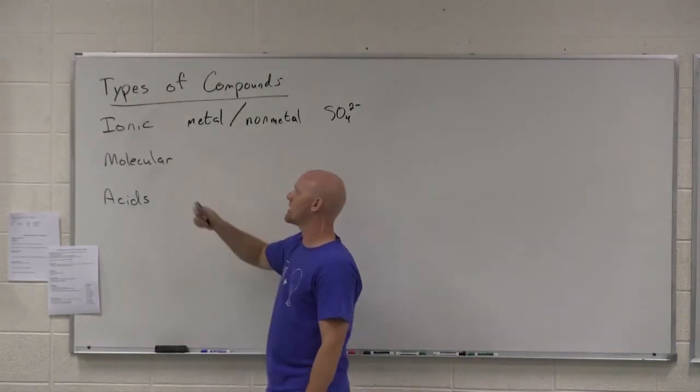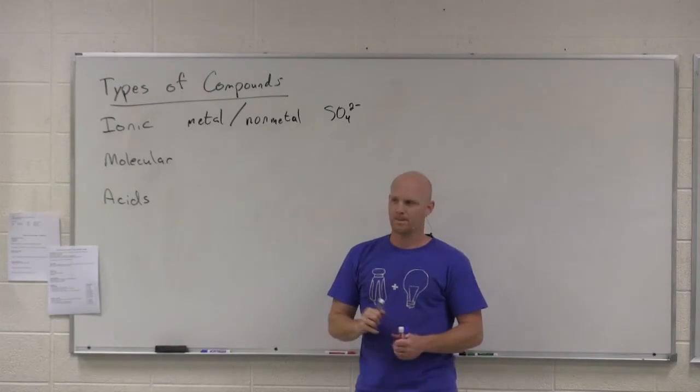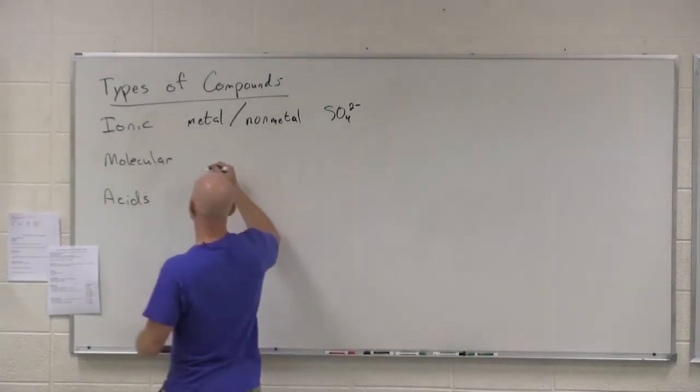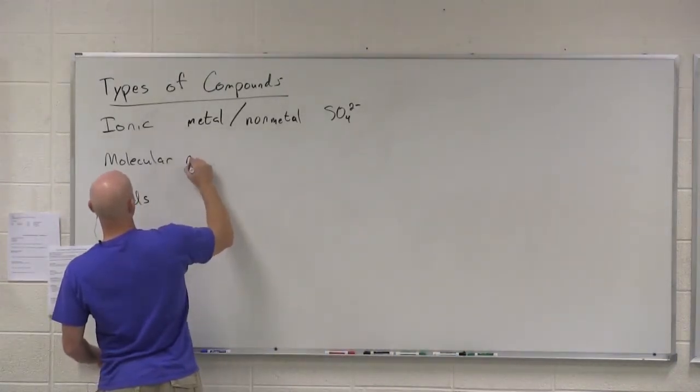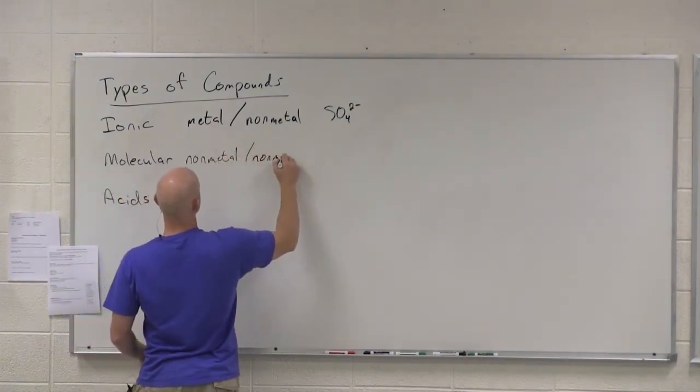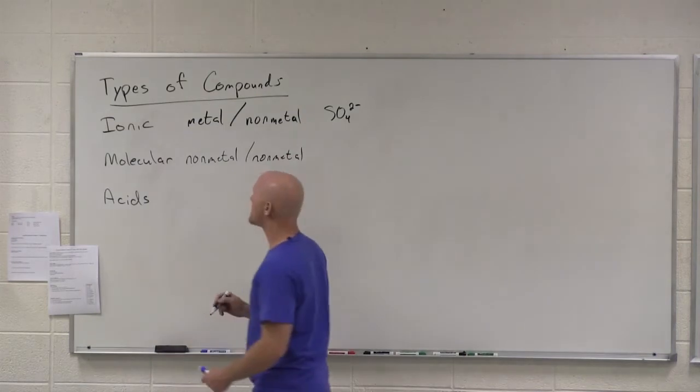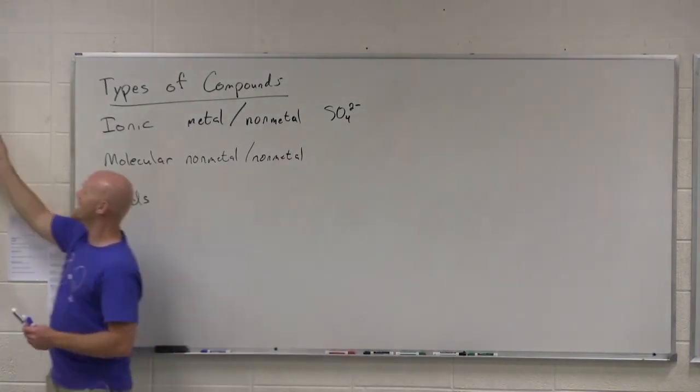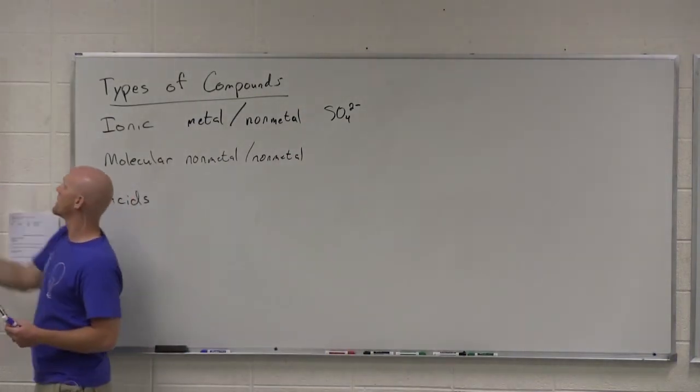We also have molecular compounds. How do we recognize these? Two non-metals. And we're typically looking at covalent bonding between two non-metals rather than ionic. We'll definitely study that in much more detail later on. But non-metal with non-metal. So we want any two of these or more, technically.